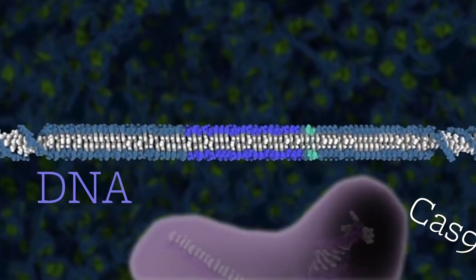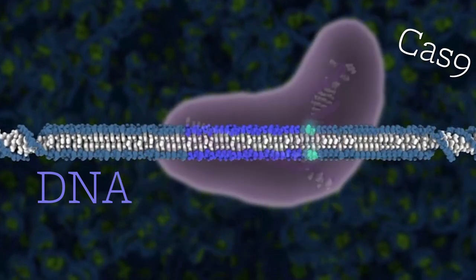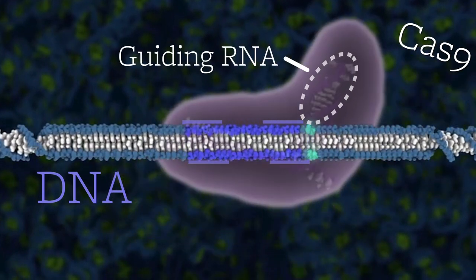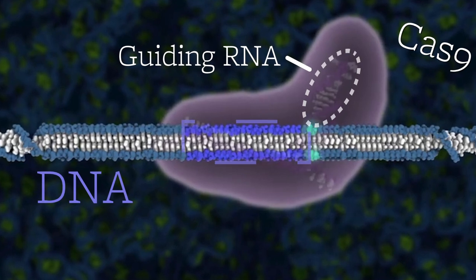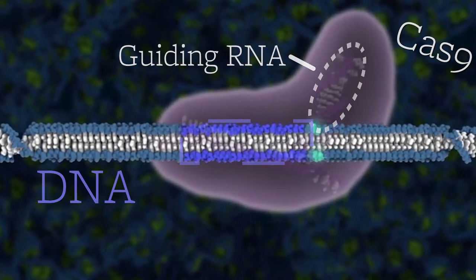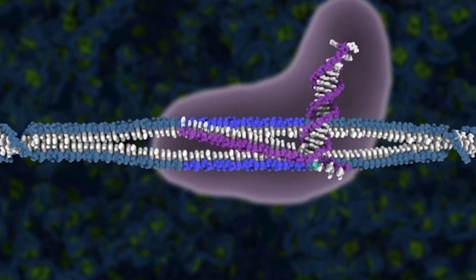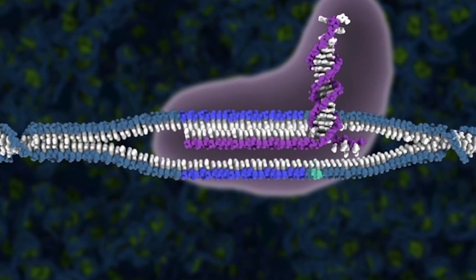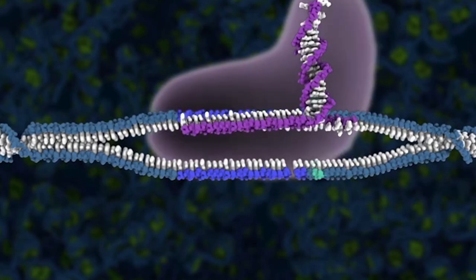For Cas9 to find the malfunctioning DNA, we attach it to an RNA sequence that matches the DNA sequence we want to edit. Then we put this RNA-Cas9 combination into the cell. It finds the mutant DNA and uses a chemical reaction to cut the DNA strand right at the spot where it's malfunctioning.